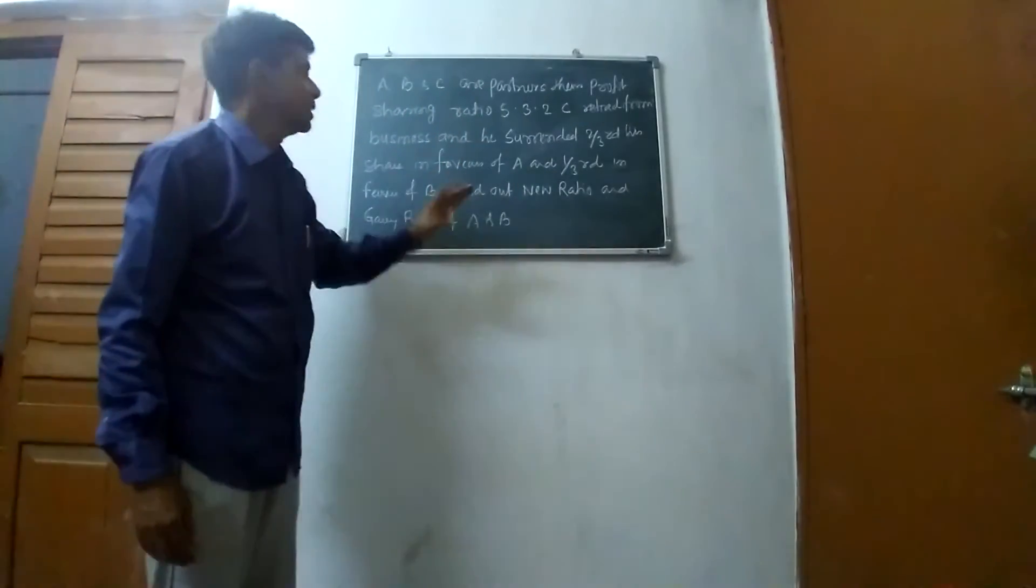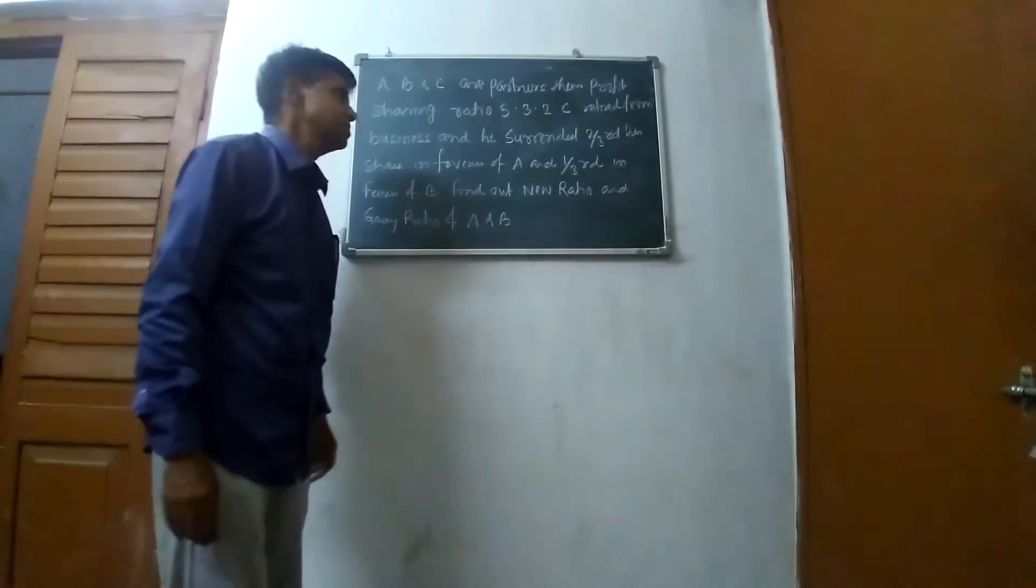A, B and C are partners, their profit sharing ratio is 5:3:2.